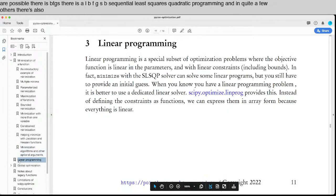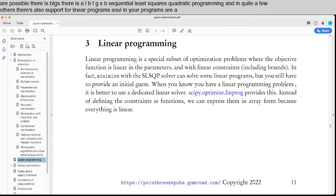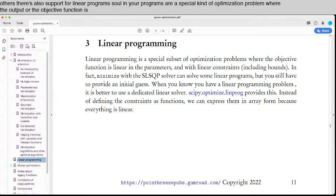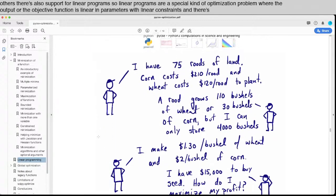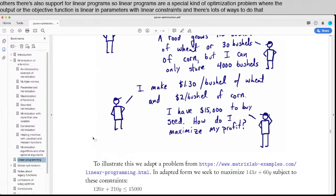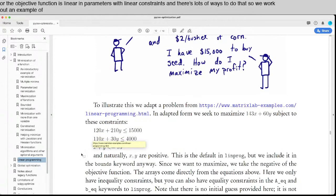There's also support for linear programs. Linear programs are a special kind of optimization problem where the output or the objective function is linear in parameters with linear constraints. There's lots of ways to do that, so we work out an example of how to solve this kind of problem.